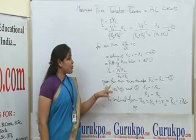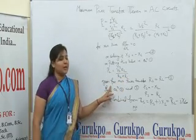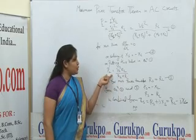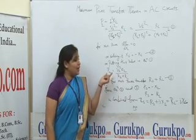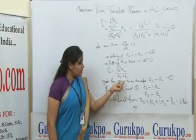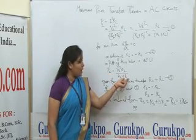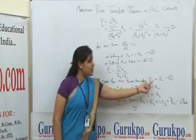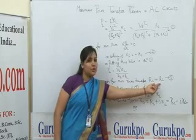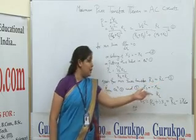Again, for maximum power transfer, the differentiation of Pl with respect to Rl should be zero. That is why Rs equals Rl.